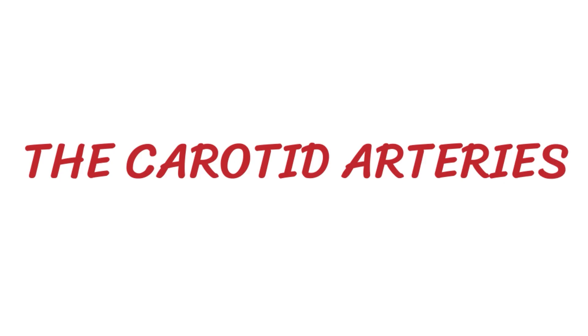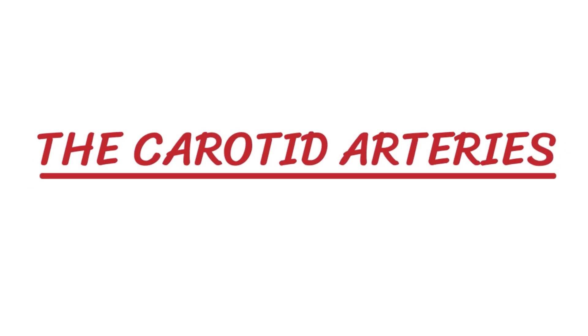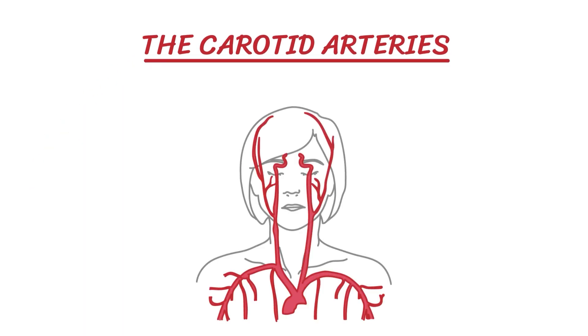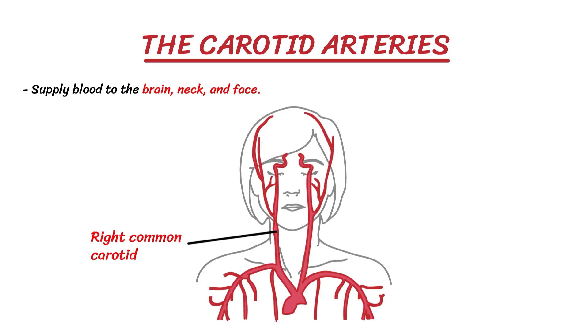The carotid arteries are major blood vessels in the neck that supply blood to the brain, neck, and face. We have two carotid arteries, one on the right side of the body and the other on the left.